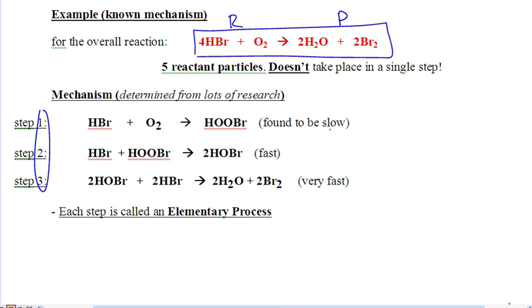You'll see in the first step, it is slow. In the second step, it's a little faster. And in the third step, it's even faster. You'll see that HBr and O2 make a HOOBr. An HBr and a HOOBr makes a couple of HOBrs. And a couple of HOBrs and an HBr makes those products.